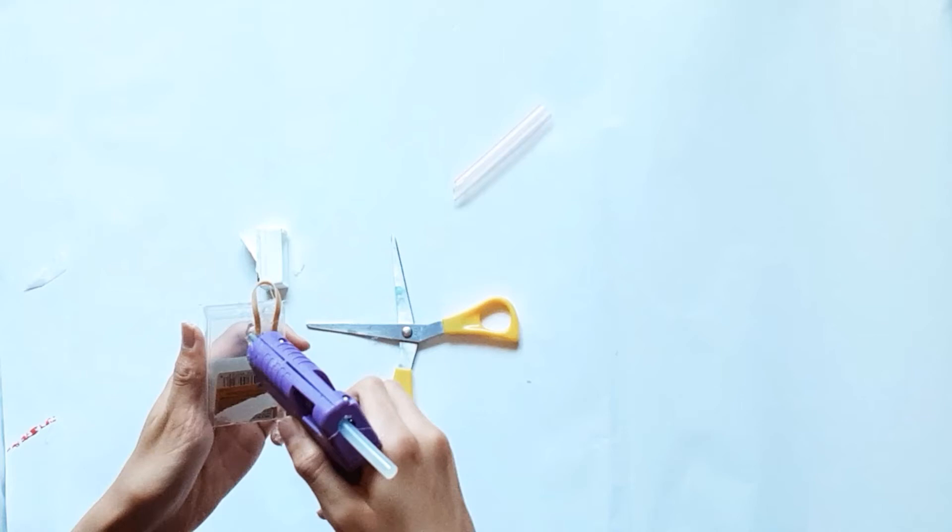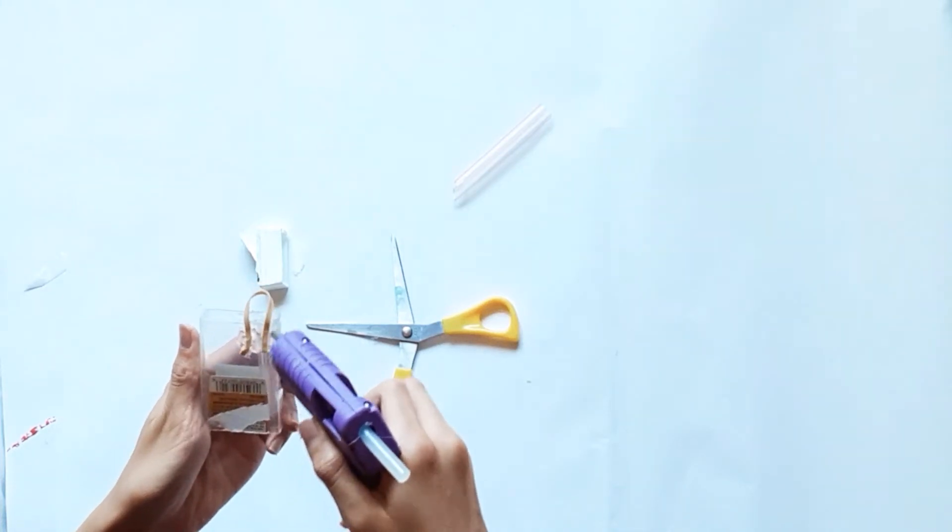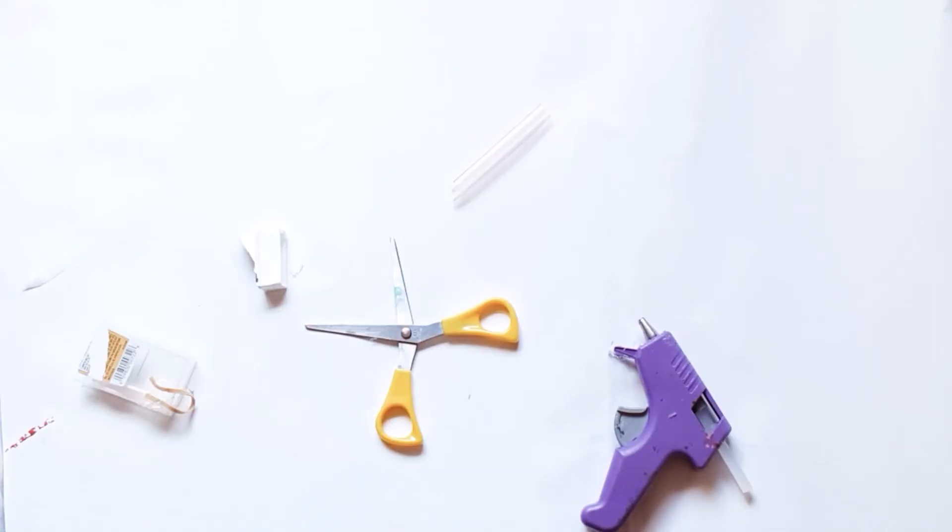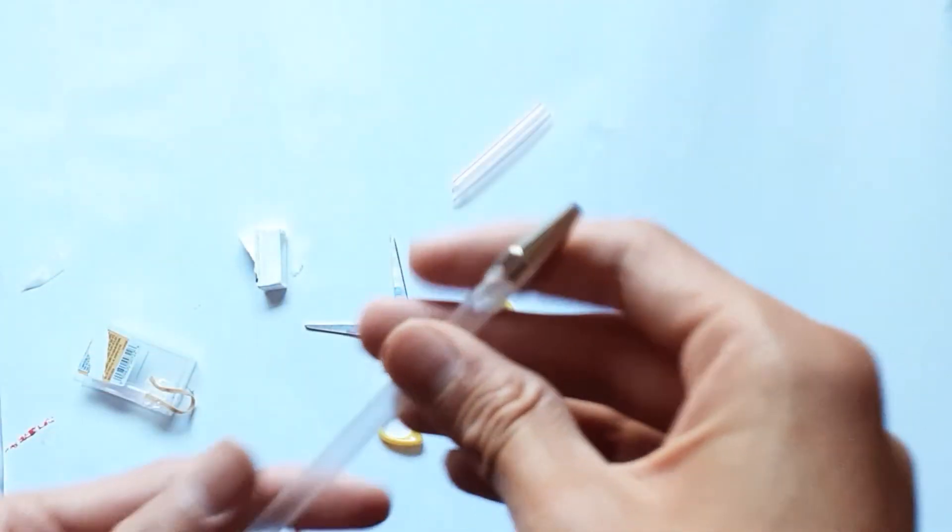It should look like that. And then, you can use more glue to secure it. Alright. Now, while waiting for that to dry, I'm going to tell you how I made the dart.